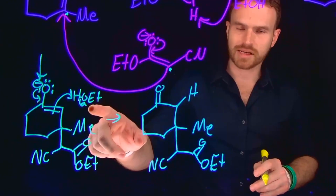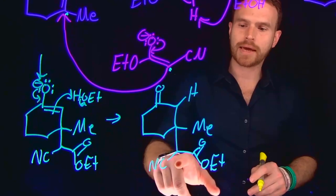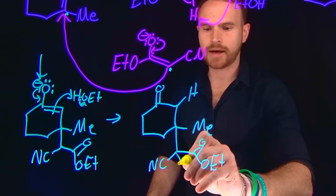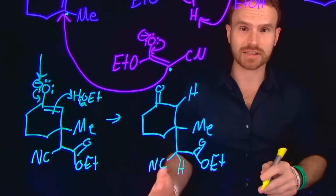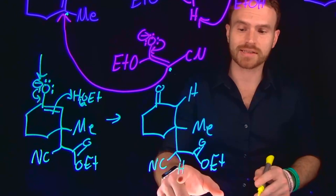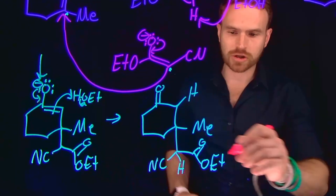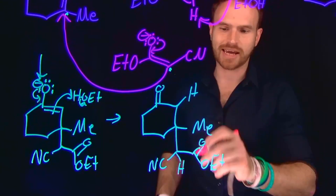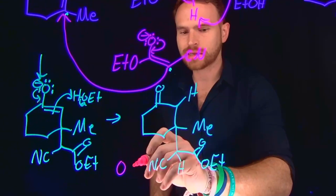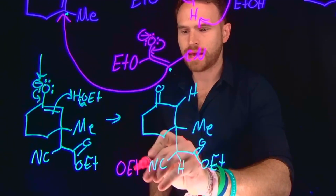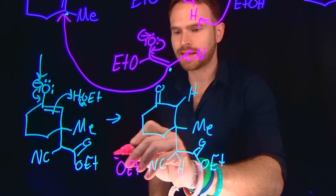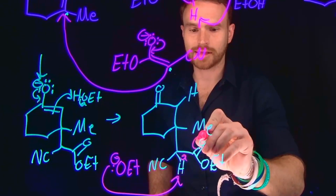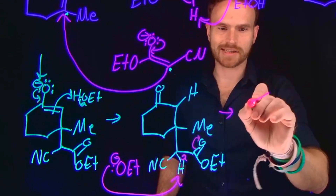Remember, we have regenerated this ethoxide, and we have now made a compound where we still have an alpha carbon hydrogen, which is potentially susceptible to nucleophilic attack because it is an acidic hydrogen. This is largely because you have these two electron-withdrawing groups attached to the same carbon, which means that ethoxide can come down and deprotonate again at that carbon position, allowing us to form a new enolate species for the second time.